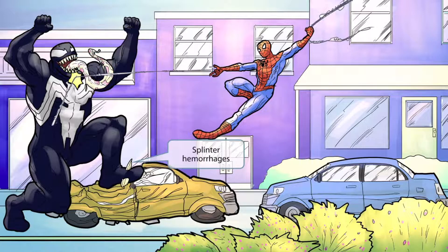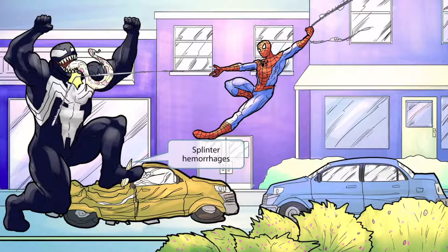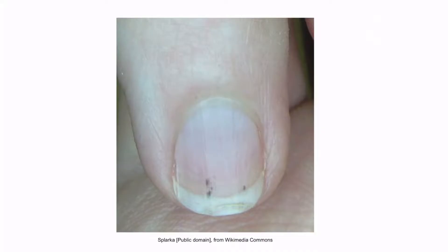As the venomous villain crushes the CAR, a sharp metal splinter goes right through his foot — didn't even phase him. The splinter in his foot is here to help you remember that bacterial endocarditis can cause splinter hemorrhages. This is an image of splinter hemorrhages — they are little hemorrhagic spots visible on the nail bed.